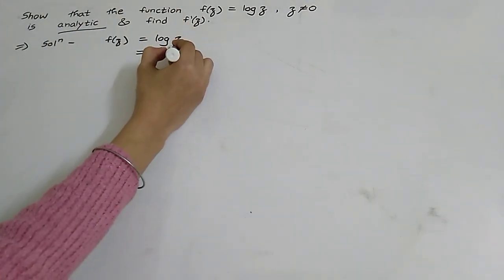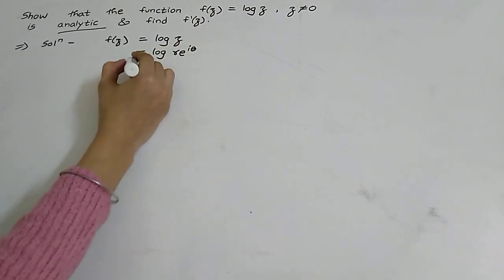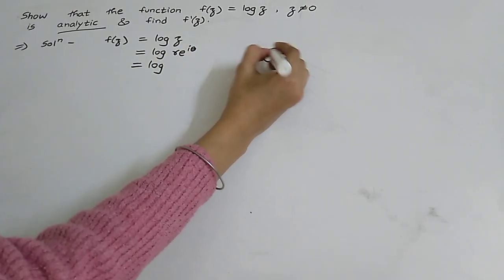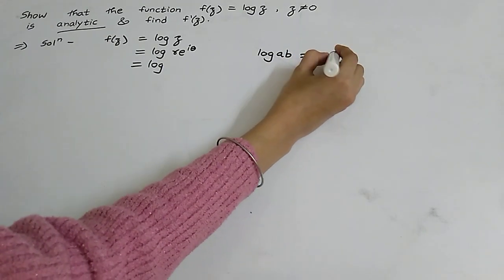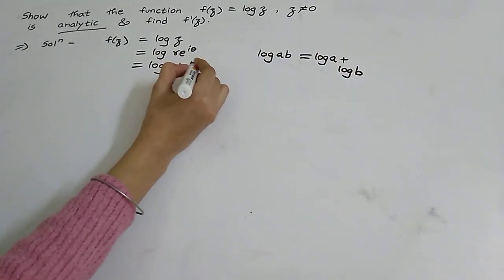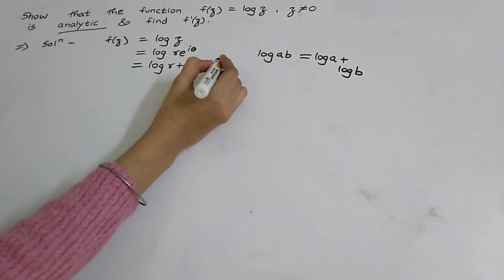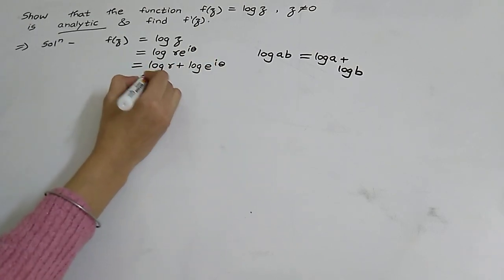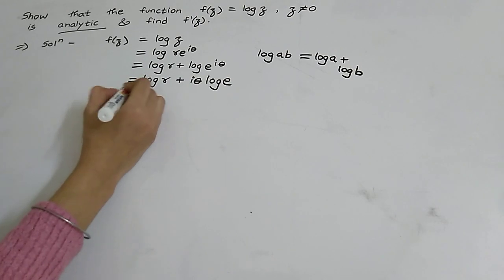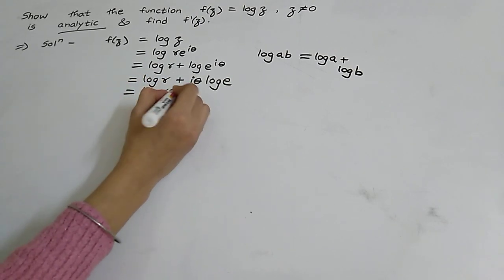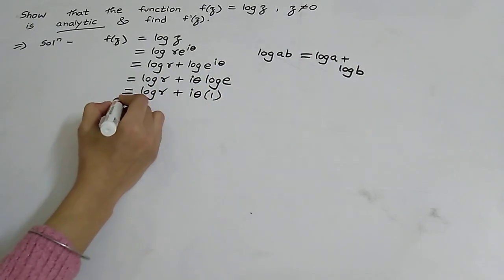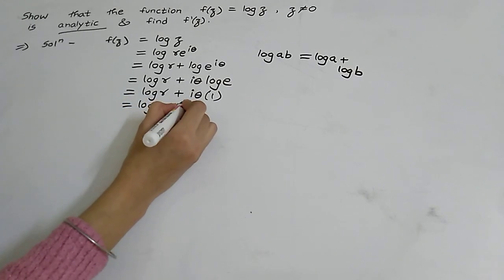We can write z in polar form as r·e^(iθ). Now we will use the property of log: log(ab) = log(a) + log(b). So we get log(r) + log(e^(iθ)), which is equal to log(r) + iθ, since log(e) = 1. So f(z) = log(r) + iθ.